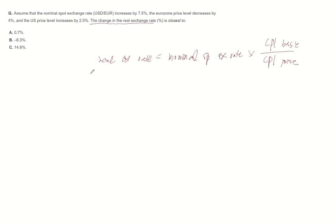This formula can be rephrased as 1 plus change of real exchange rate is equal to 1 plus change of nominal spot rate multiplied by 1 plus change of base currency divided by 1 plus change of price currency.